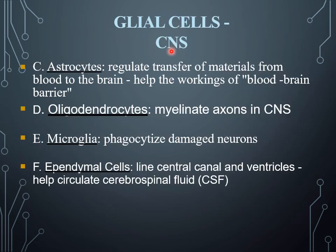Glial cells of the central nervous system consist of astrocytes, oligodendrocytes, microglia, and ependymal cells. Astrocytes are involved in the regulation and transfer of material from the blood to the brain and help in the functioning of the blood-brain barrier present in the CNS.